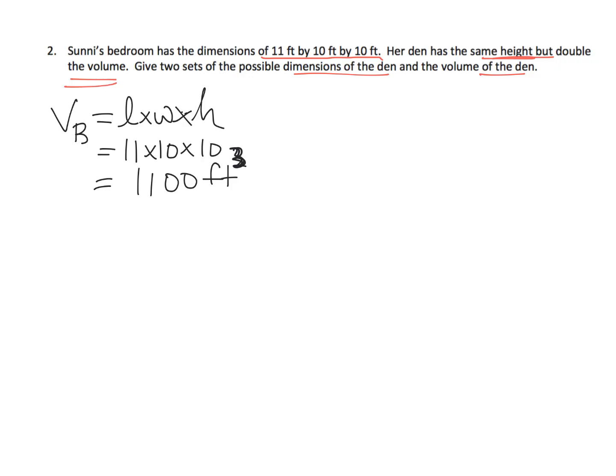Now we're told that the den has the same height. Now, the way I kind of did it length width height, so I kind of decided that the height was 10. Technically, we don't know. It could have been this 11 is our height. We really don't know because the order, multiplication is commutative, right? So, but I'm going to say that the height is 10. So I'm going to stick with that 10 being our height.